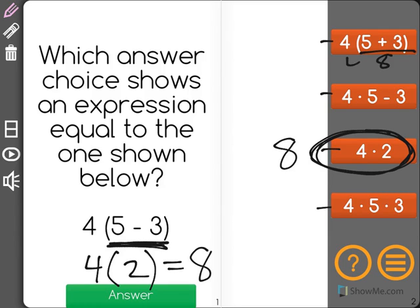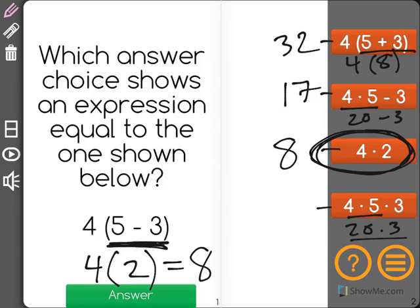Here I have 4 times 8 which would be 32. 4 times 5 is 20, minus 3 is 17. 4 times 5 is 20, times 3 is 60.